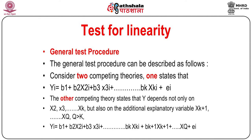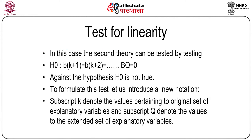The general test procedure can be described as follows. Consider two competing theories. One states y_i = β1 + β2*x2i + β3*x3i + ... + βk*xki + ei. The other theory states that y depends not only on x2, x3, ..., xk but also on additional explanatory variables xk+1 up to xq, where q is greater than k. So one can write y_i = β1 + β2*x2i + ... + βk*xki + βk+1*xk+1i + ... + βq*xqi + ei. The second theory can be tested by testing H0: βk+1 = βk+2 = ... = βq = 0 against the alternative that H0 is not true.